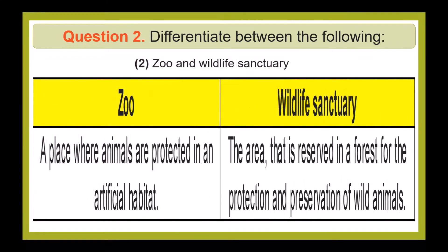Zoo and Wildlife Sanctuary. A zoo is a place where animals are protected in an artificial habitat. A wildlife sanctuary is the area reserved in a forest for the protection and preservation of wild animals.